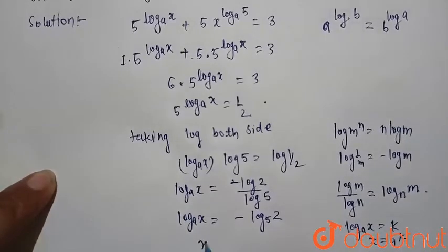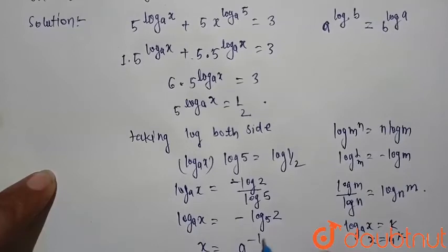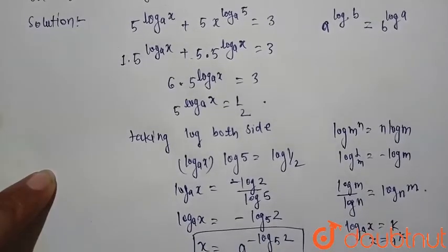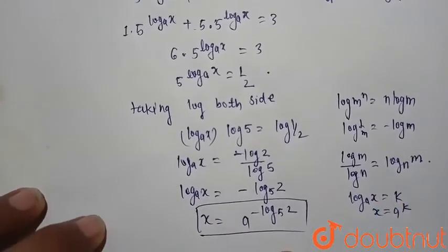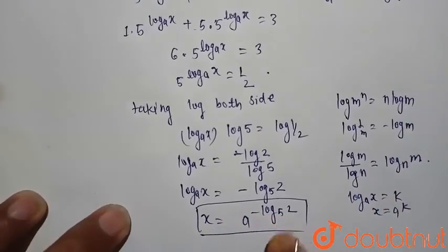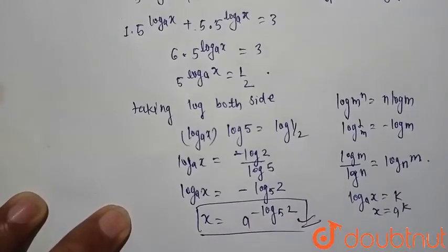Here x equals a raised to power minus log 5 2. So x equals a raised to power minus log 5 2. This is our answer. Thank you.